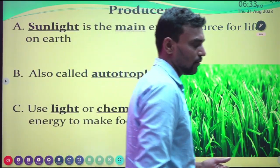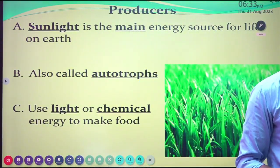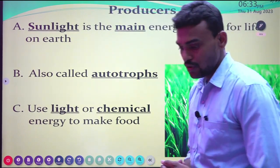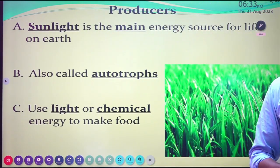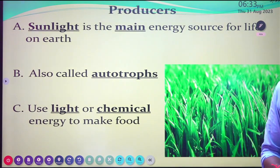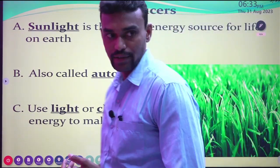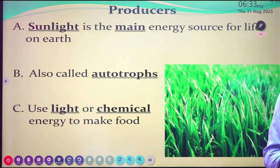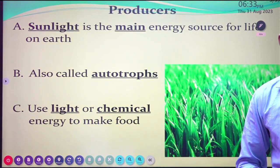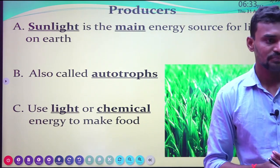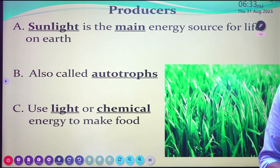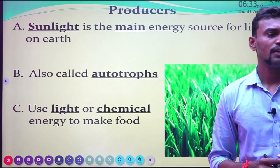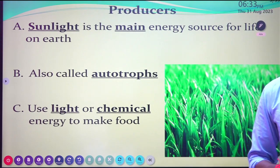In detail, sunlight is the main energy source of life — for humans and all living organisms present on planet Earth. Sunlight is the energy source of life on Earth. Organisms that use sunlight are also called autotrophs. 'Auto' means self and 'trophs' means they depend on that — autotrophs use light or chemical energy to make food.